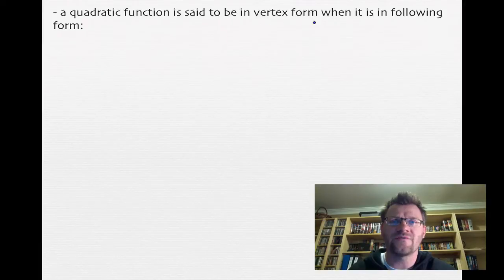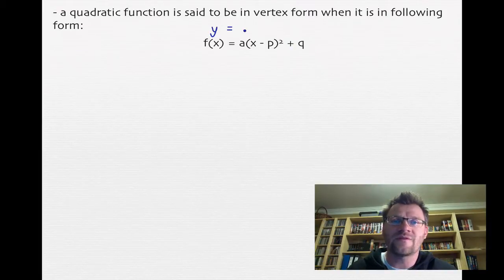A quadratic function is said to be in vertex form when it's in the following form: f(x) = a(x - p)² + q. And f(x) is the same thing as saying y, so that's like saying y = a(x - p)² + q.